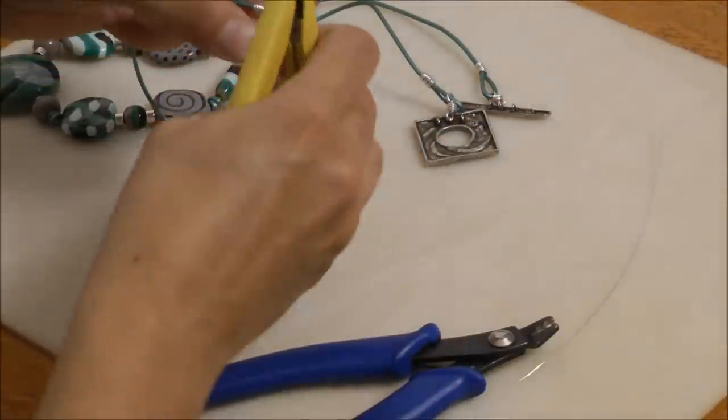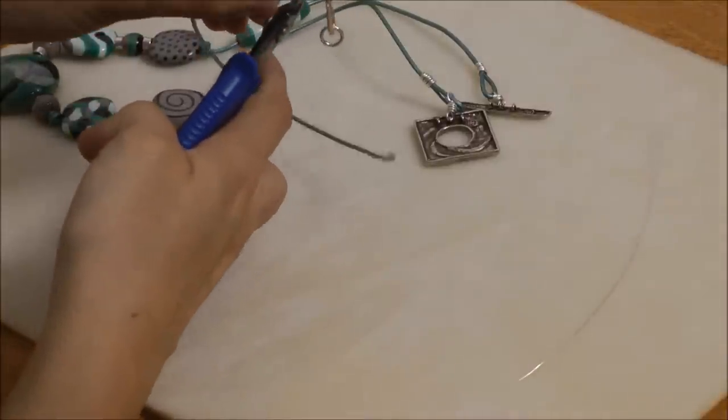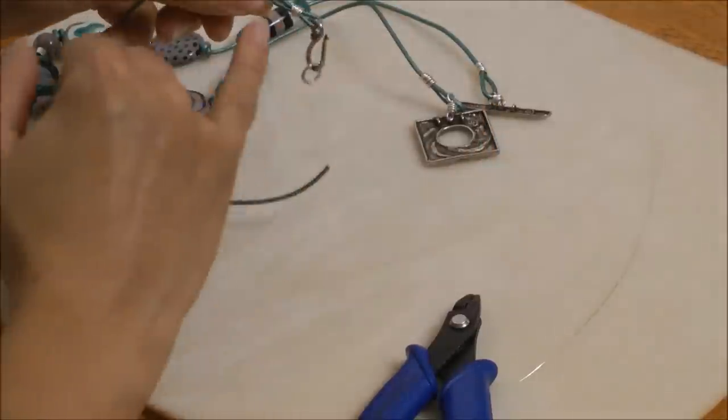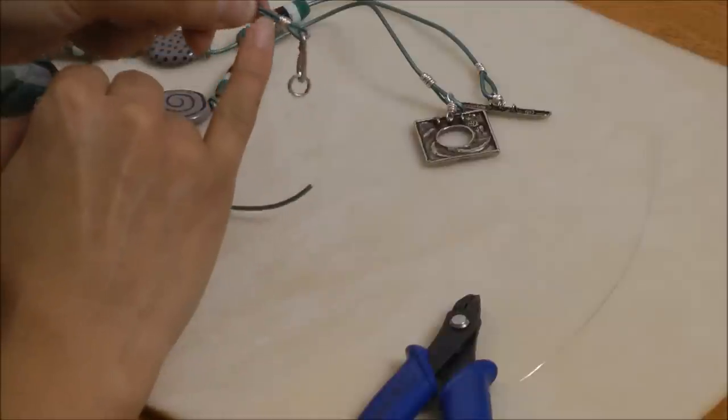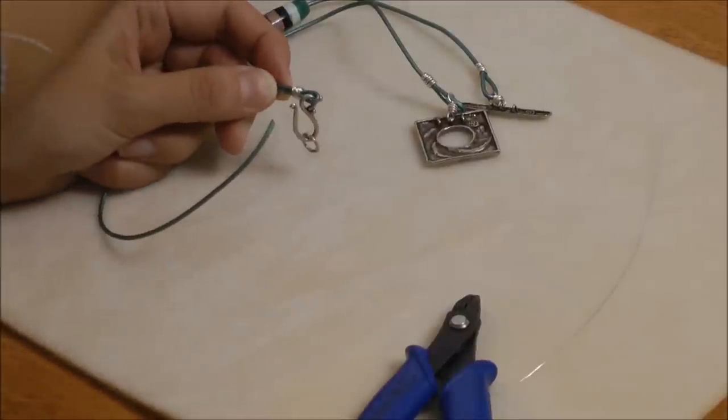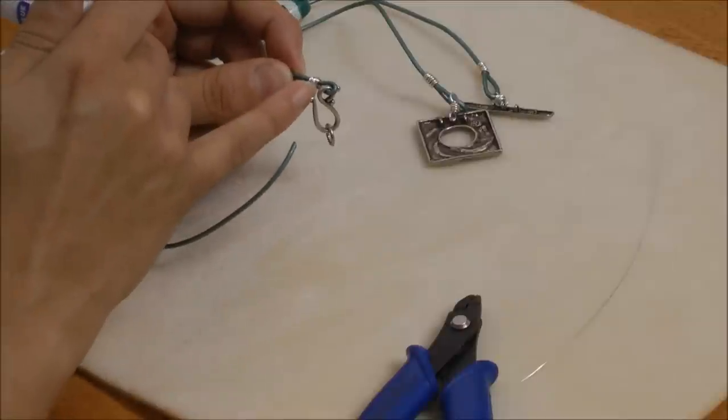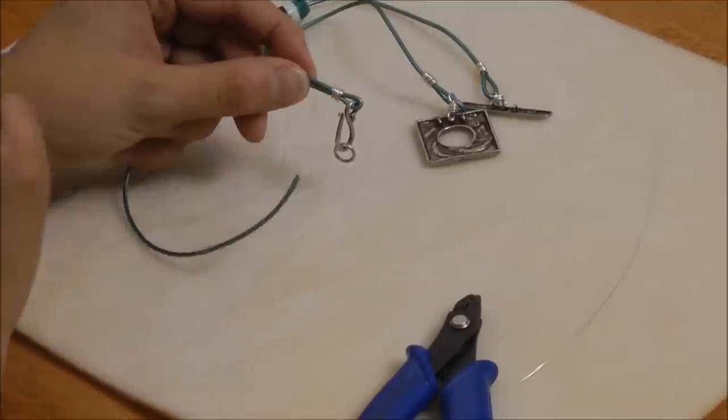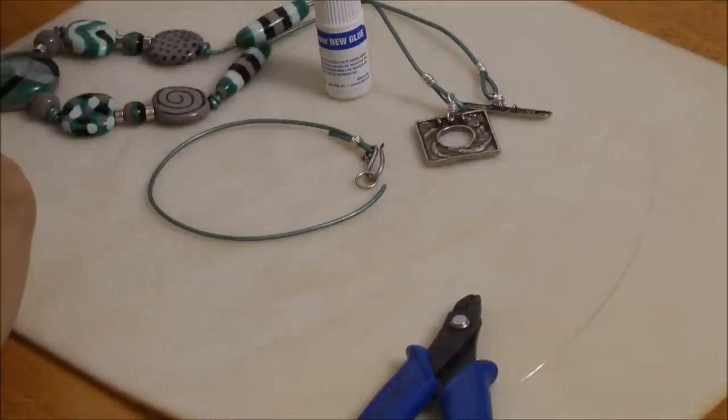And again, use my crimping pliers to round that out, or you can even use chain nose or other wire working pliers. Then I would just go through and snip off the last bit of that leather there. And you can add a tiny little dab of glue, the super new glue, right inside there if you'd like, just to have a little added extra bit of security. So that's how you will finish the piece using wire. And we'll do one more technique.